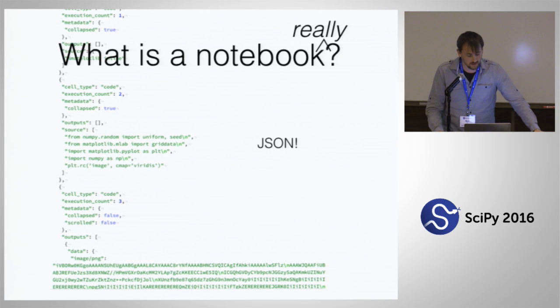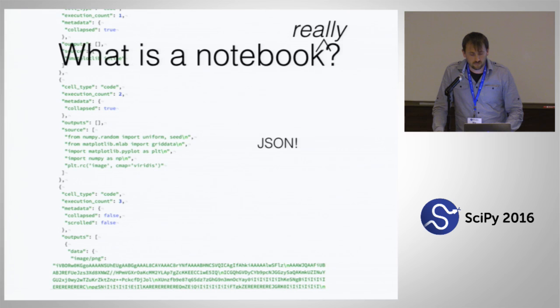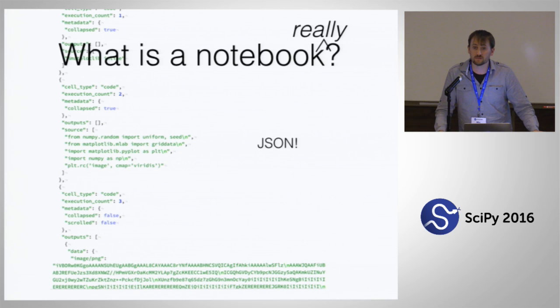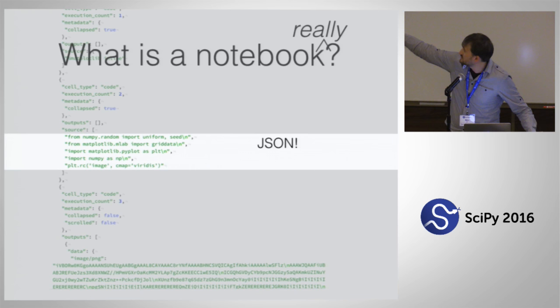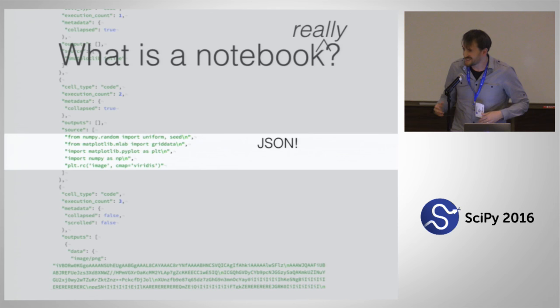There's certainly value in that — all this structured information that's easy to find. If you open a notebook in JSON and load it as a Python dictionary, it's easy to poke around and see what everything means. But when you've got a file format that's JSON, humans shouldn't be looking at it. Humans should be looking at some processed result. So anytime you've got a human looking at JSON, something has gone wrong.